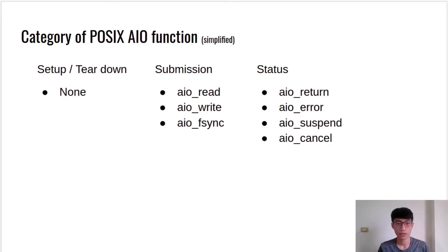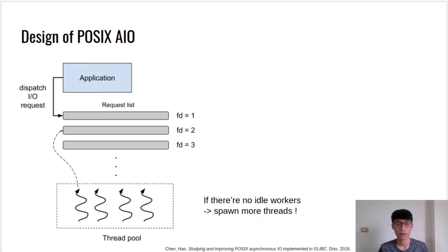After submission, the user needs to monitor the status of submitted requests. aio_return can retrieve the written result from a completed request. aio_error can obtain whether I/O requests are still in progress. As shown in the figure, it is the big picture of POSIX AIO. When I/O requests are triggered, they will be dispatched to the global request list, which is a linked list where requests with the same file descriptor are grouped. POSIX AIO maintains several worker threads to take care of submitting requests. When a working thread is idle, it will fetch the head of the run list and work on another request. If there are no idle workers, POSIX AIO will spawn a new worker thread until reaching the limit.